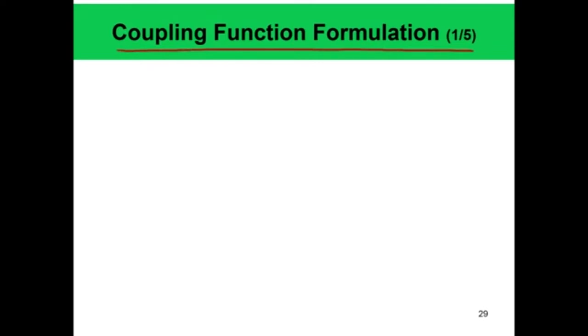The topic is coupling function formulation. We will consider a general one-step reaction, because though it can be applied to multi-step reactions, it is easy to understand in terms of an overall one-step reaction. A general one-step overall reaction is: the sum from i equals 1 to n of nu_i' times M_i goes to the sum of nu_i'' times M_i.